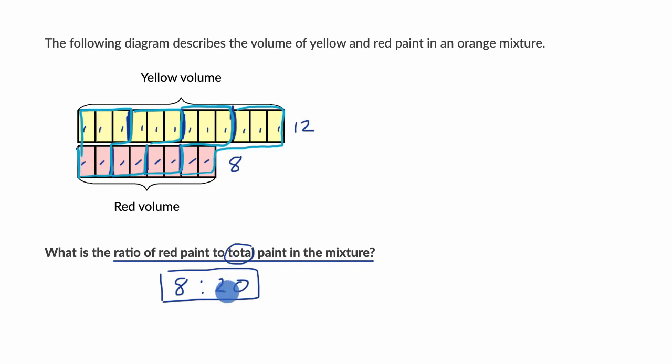Now, once again, the ratio that they're asking isn't the ratio of red to yellow, which is two to three, but you could just take one of these groups and say, all right, for every two parts of red, I have one, two, three, four, five parts of total paint.